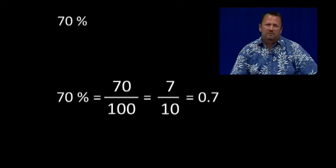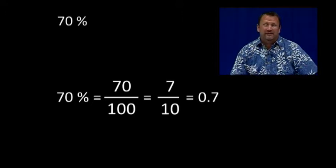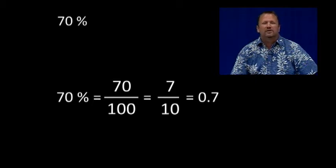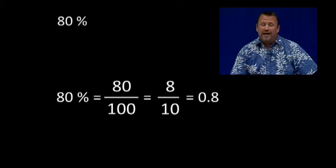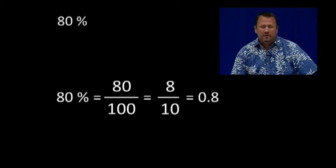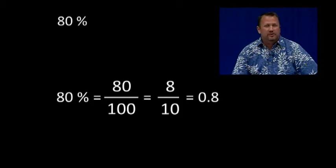70% is equal to 70 hundredths, which is equal to 7 tenths, which is equal to 0.7. 80% is equal to 80 hundredths, which is equal to 8 tenths, which is equal to 0.8.